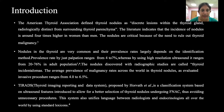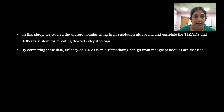Thyroid Imaging and Data System, proposed by Haworth et al., is a classification system based on 5 ultrasound characteristics which allows for better selection of thyroid nodules requiring FNAC and thereby avoids unnecessary invasive procedures. It also unifies language between radiologists and endocrinologists worldwide using standard lexicons. In this study, we used high-resolution ultrasound and correlated TIRADS with the Bethesda system for reporting thyroid cytopathology to assess efficacy in differentiating benign from malignant nodules.